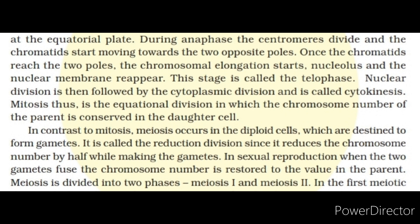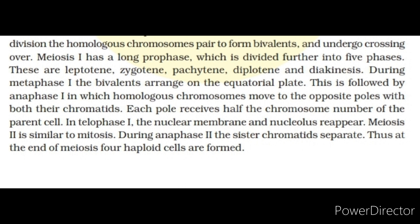Meiosis is divided into two phases: meiosis I and meiosis II. In the first meiotic division, the homologous chromosomes pair to form bivalents and undergo crossing over. Meiosis I has a long prophase which is divided further into five phases: leptotene, zygotene, pachytene, diplotene and diakinesis. During metaphase I, the bivalents arrange on the equatorial plate. This is followed by anaphase I in which homologous chromosomes move to the opposite poles with both their chromatids. Each pole receives half the chromosome number of the parent cell. In telophase I, the nuclear membrane and nucleolus reappear. Meiosis II is similar to mitosis. During anaphase II, the sister chromatids separate. Thus, at the end of meiosis, four haploid cells are formed.